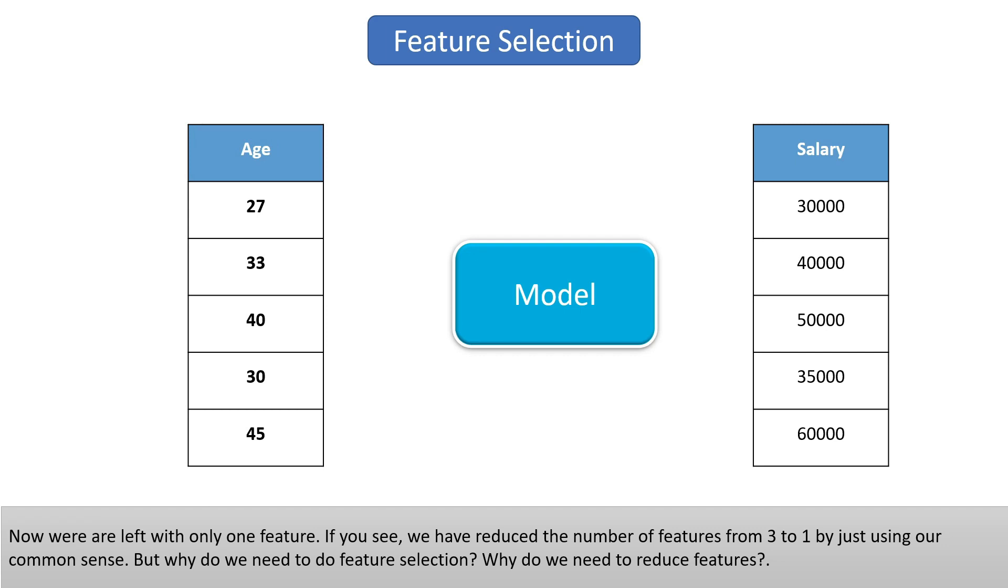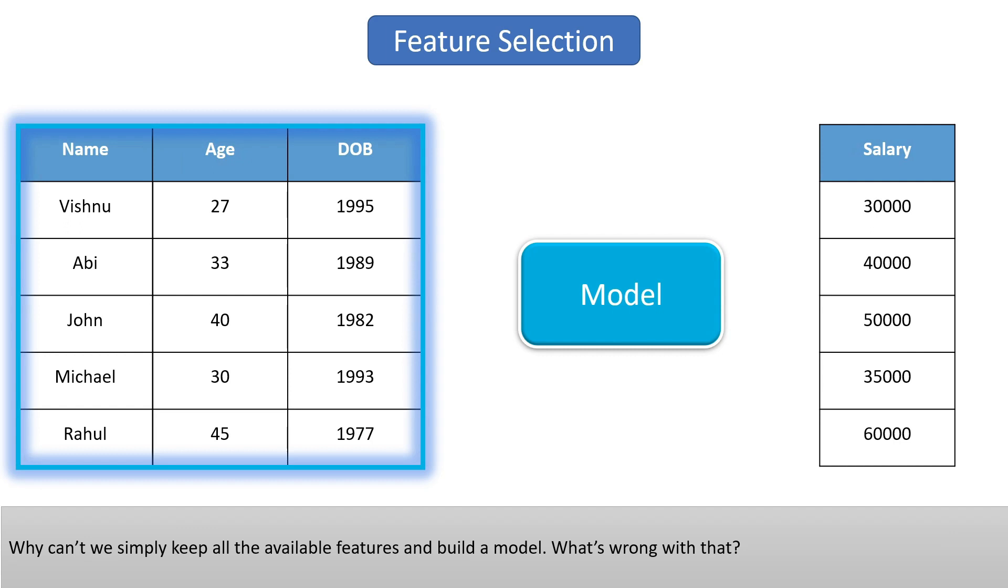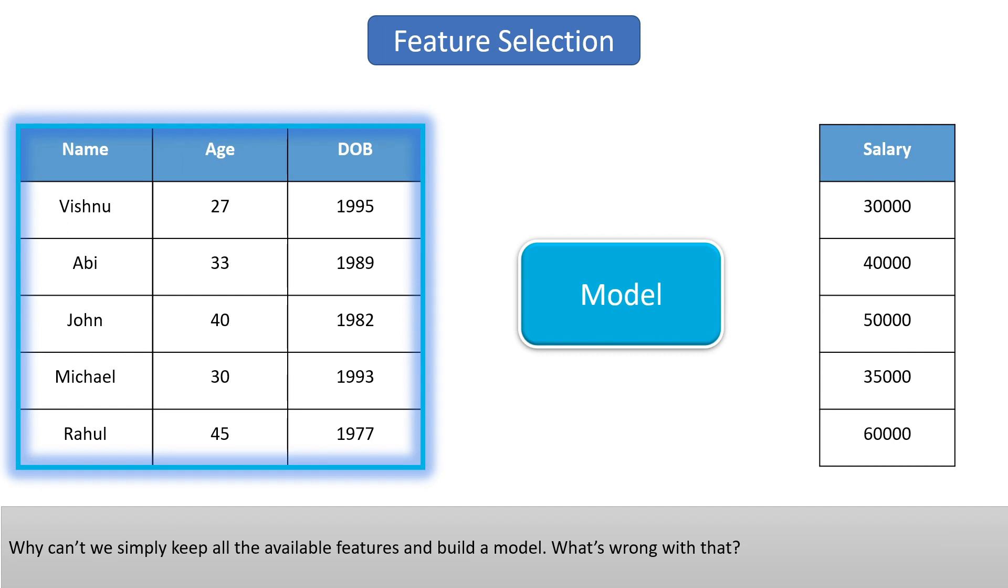As you can see, we've reduced the number of features from three to one by just using our common sense. But why do we need to do feature selection? Why do we need to reduce features? Why can't we simply keep all available features and build a model? What's wrong with that?